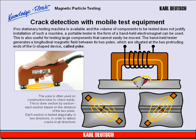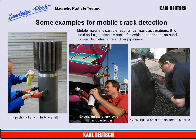Each section is tested diagonally in two directions in order to detect cracks in all directions. Mobile magnetic particle testing has many applications. It is used on large machine parts, for vehicle inspection, on steel construction elements and for pipelines. The pictures show the inspection of a wind turbine shaft, a crucial safety check on a roller coaster car, and checking the ends of a section of a pipeline.